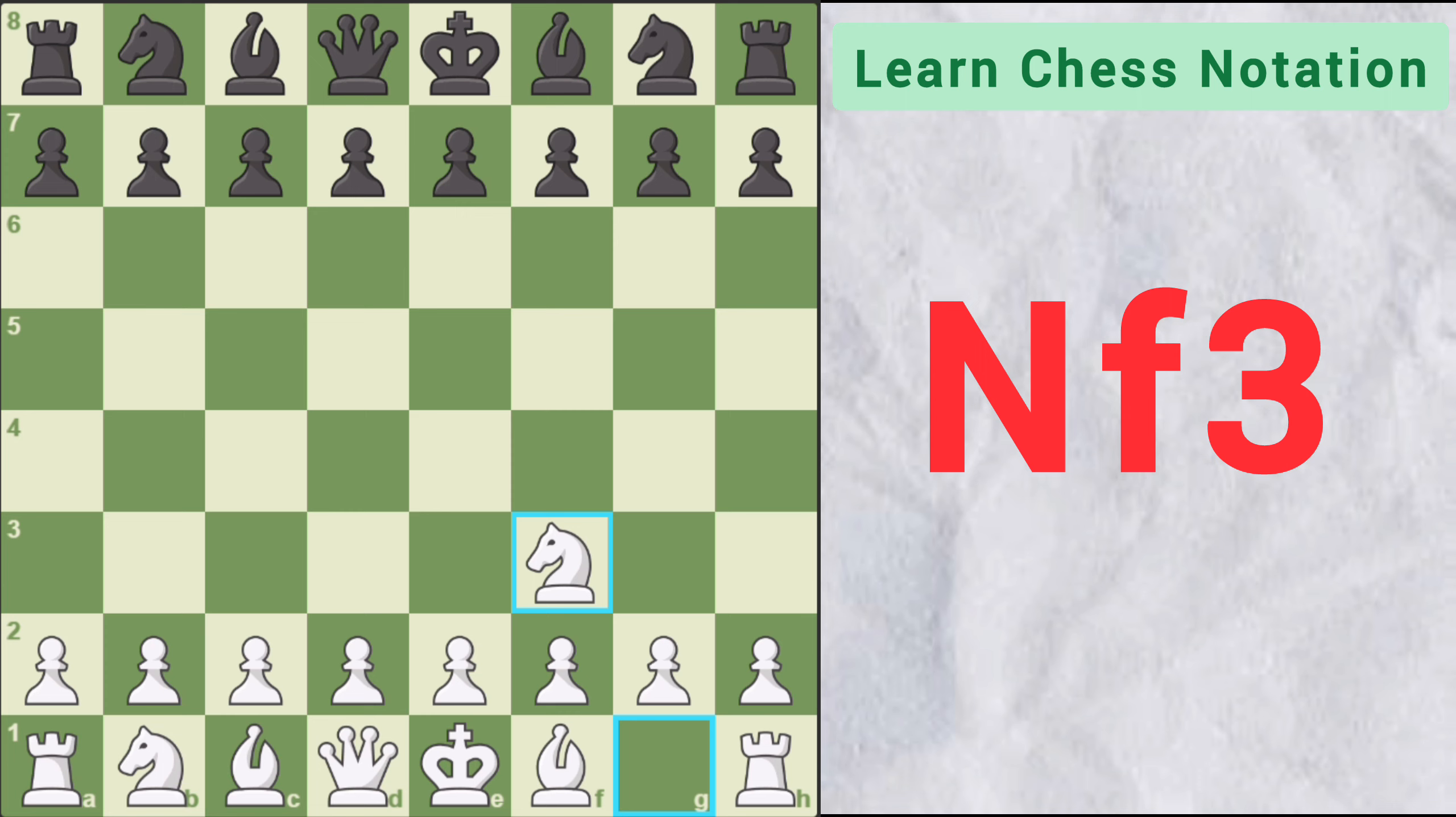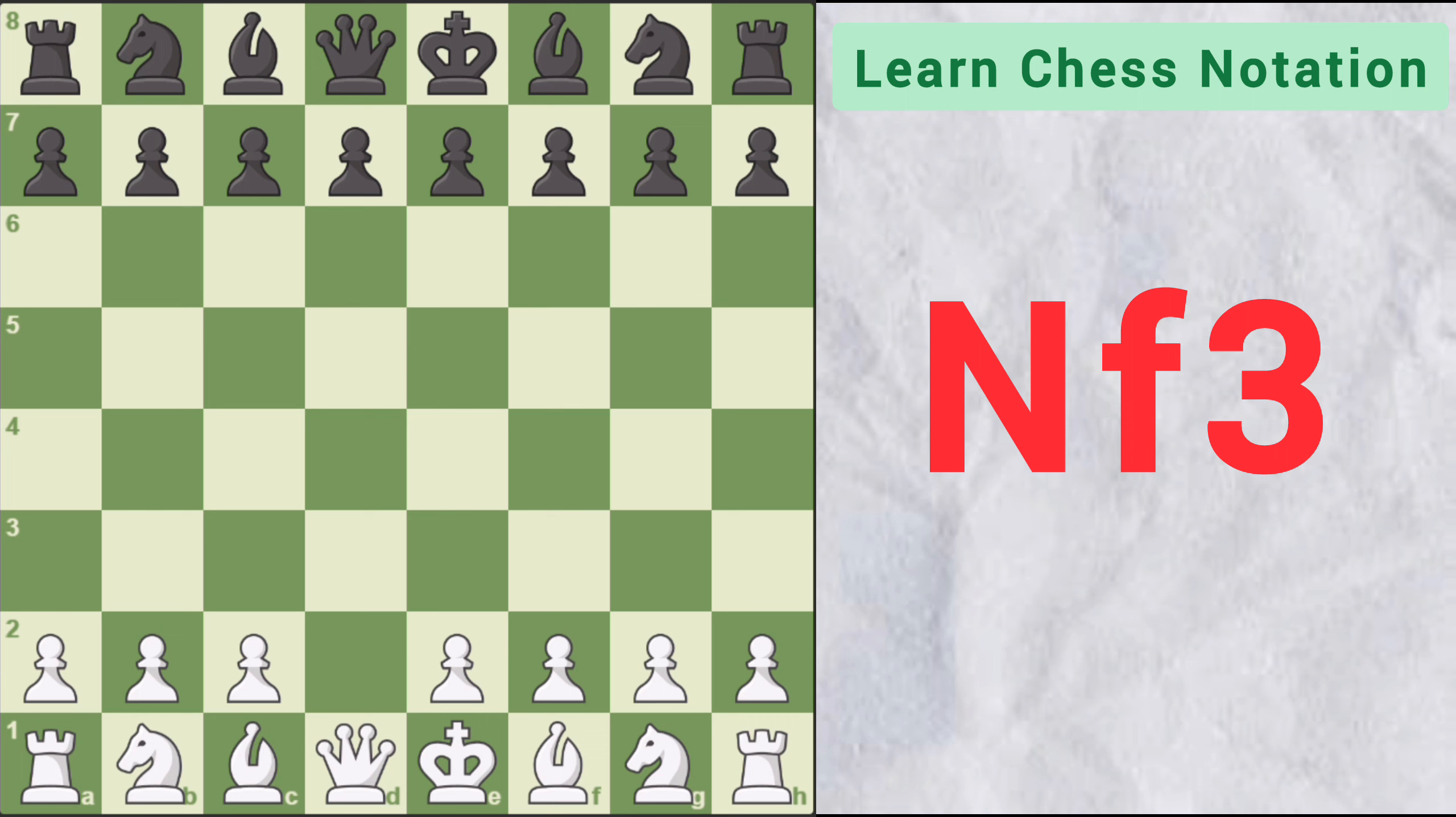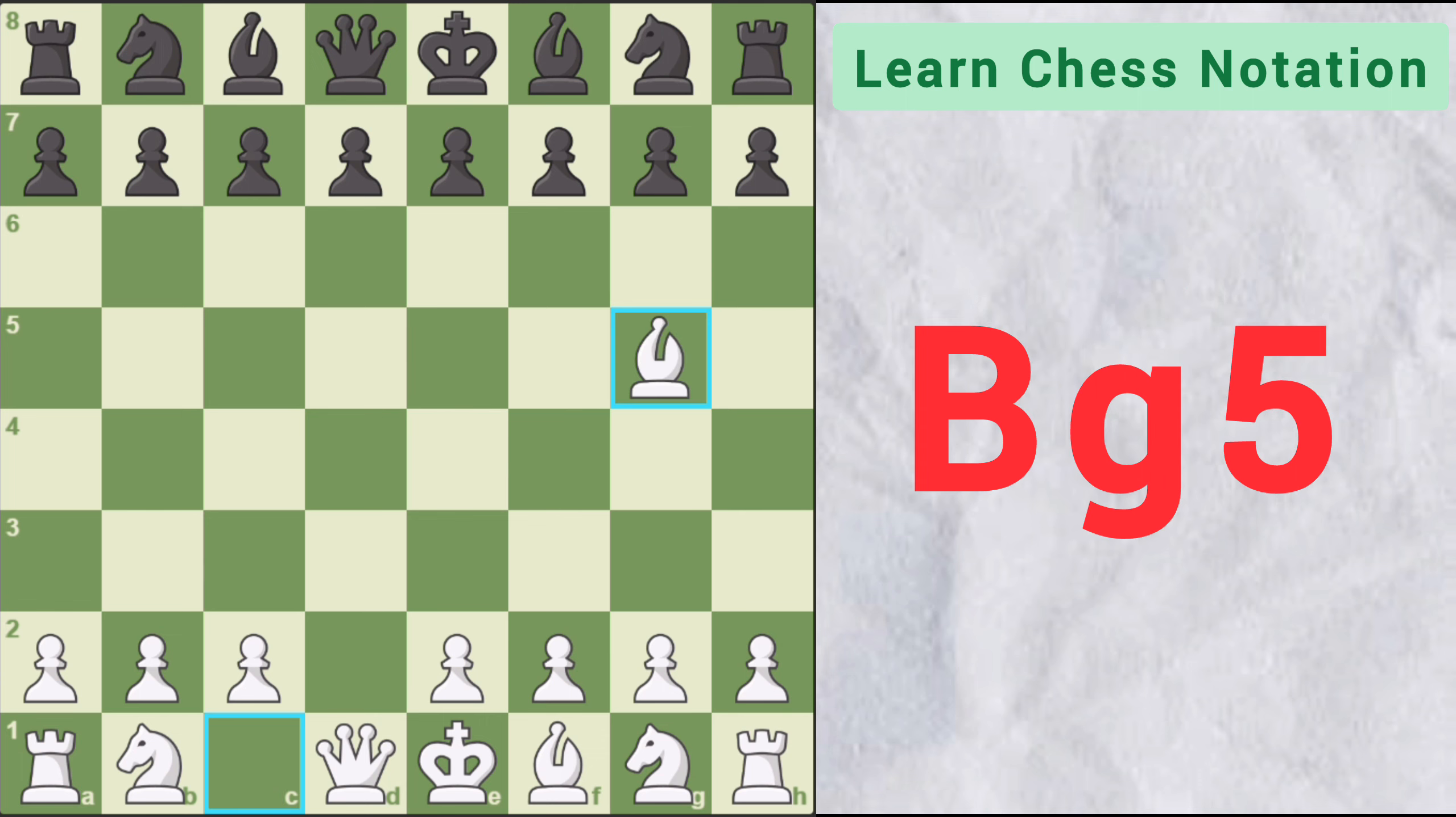Also keep in mind that notation of piece is written in upper case whereas the letter of the square is written in lower case. Similarly, if I move my Bishop to G5, then it will be written as BG5. Easy, right?